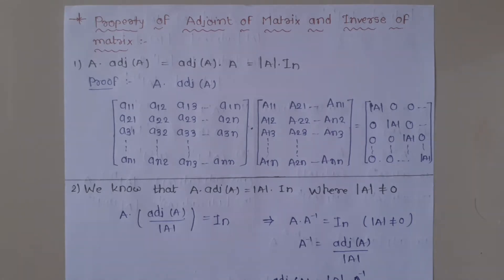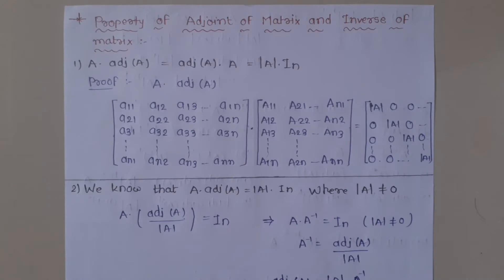This is the main and advanced topic for you. Let's start with Property number 1. Property 1 is: A into Adjoint of A is equal to Adjoint of A into A, which equals Determinant of A into I_n. I_n is the nth order unit matrix.